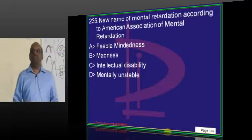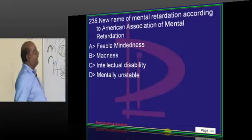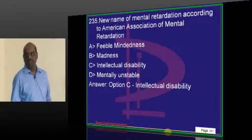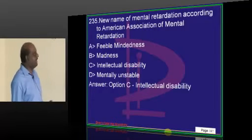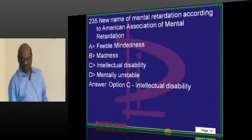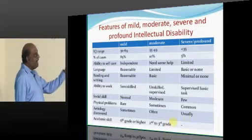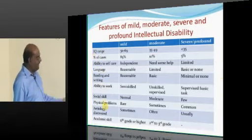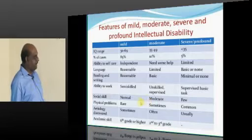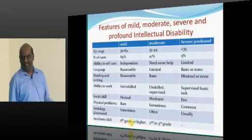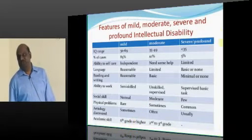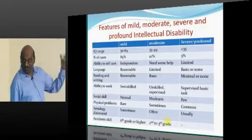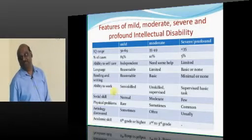What is the new name for mental retardation according to the American Association of Mental Retardation? The new name is intellectual disability. It has mild, moderate, and severe categories based on language, reading, writing ability, and ability to work. You must know the criteria — the next exam will ask how to define moderate or mild in a given person.